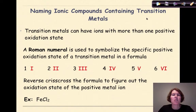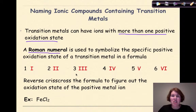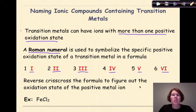Now let's talk about naming ionic compounds containing transition metals — elements in groups 3 through 12 on your periodic table. Transition metals can have ions with more than one positive oxidation state, so many of these elements will have two, three, or even more charges. A Roman numeral is used to symbolize the specific positive oxidation state of a transition metal in a formula. Roman numerals I through VI are the ones you'll need — anything past six is rarely needed for Regents chemistry. To figure out which Roman numeral to use, reverse crisscross the formula to determine the oxidation state of the positive metal ion.